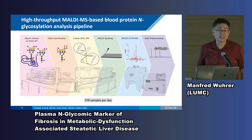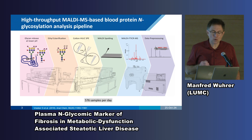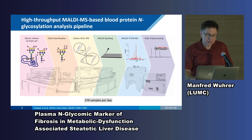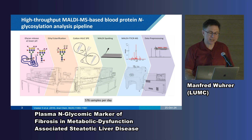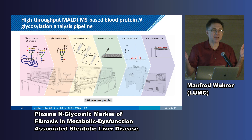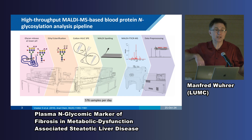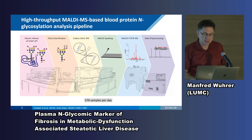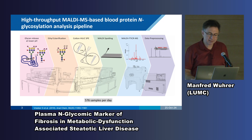We established this derivatization methodology already more than 10 years ago, and we are still happy with it. We turn isomers into different chemical entities with a distinct mass by lactonization or ethyl ester formation — different masses which allow you to differentiate between the 2,3-linked and 2,6-linked sialic acid. We do a cleanup, and then we do a mass spec analysis of these glycans.